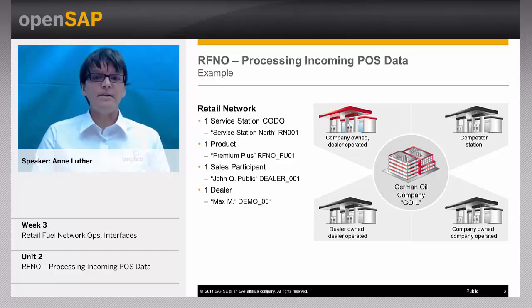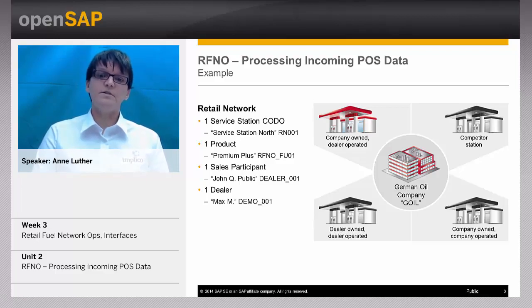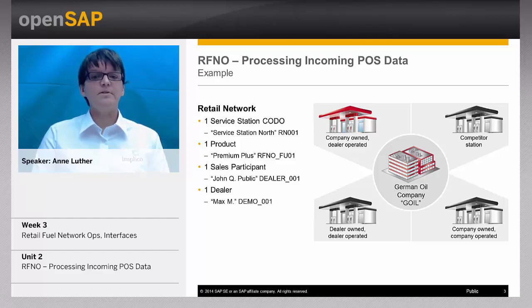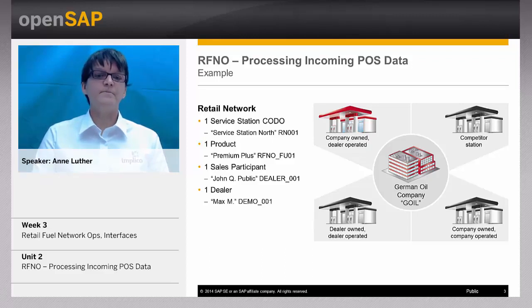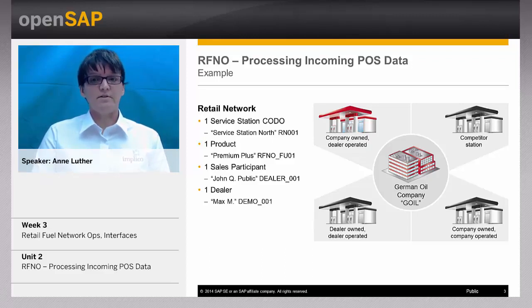In our mini network, the customer can buy only one product. The dealer managing the service station is Max, and the sales participant is John, who gets a commission for the sales events. Of course, this situation is constructed, but it allows you to recognize the roles concept.